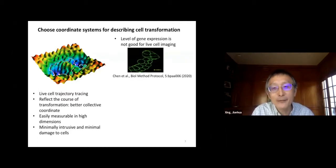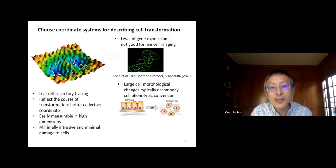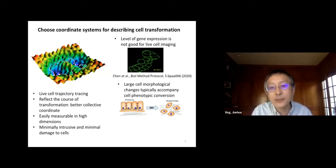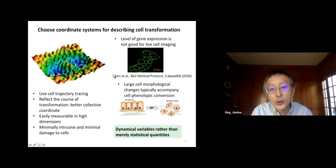One first choice is to fuse fluorescent protein to certain molecular species. My lab spent several years working on this with CRISPR, but there are many limitations and concerns. Then we realized another option: cell morphological features — really anything we can observe even with a transmission light microscope or simple staining. We know cell phenotypic transitions typically accompany large cell morphological changes. These morphological features have been routinely used in pathology, but the fundamental conceptual difference here is that we use those collective features as dynamical variables rather than just statistical quantities.